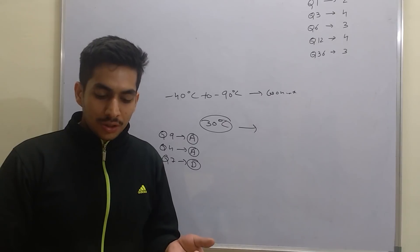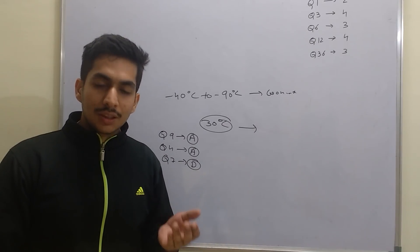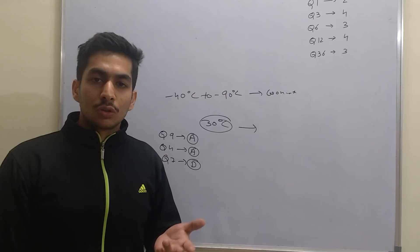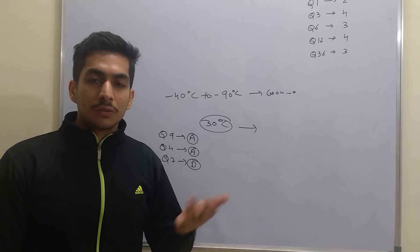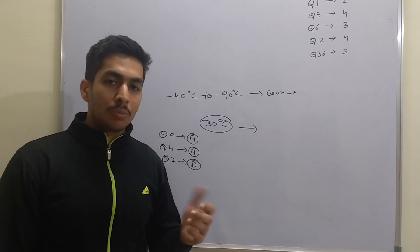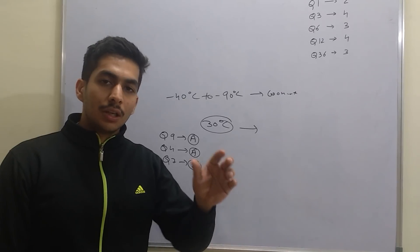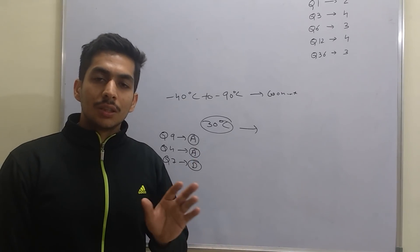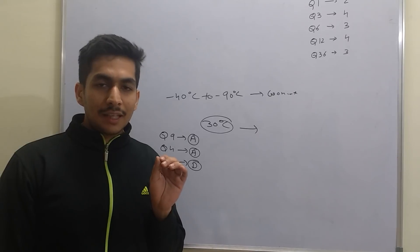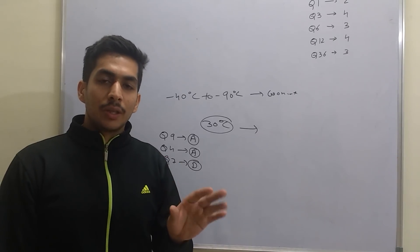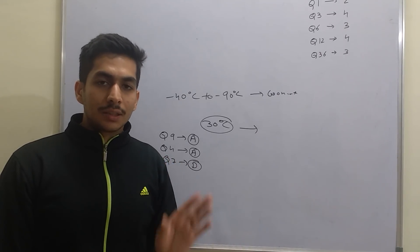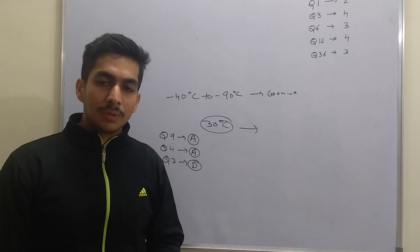Another option states: 'A harmonic oscillator possesses zero-point energy.' This is also in accordance with the uncertainty principle. The uncertainty principle correctly defines the zero-point energy of a harmonic oscillator, so this statement is absolutely correct.